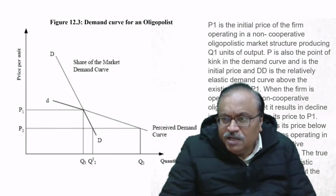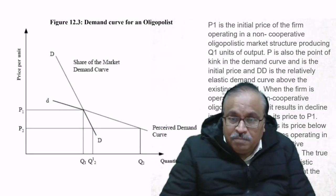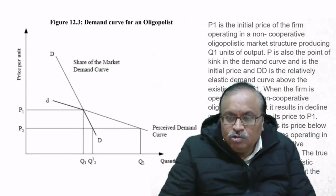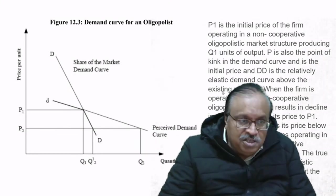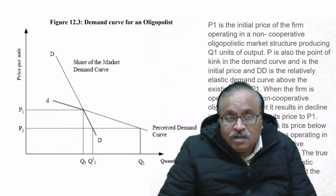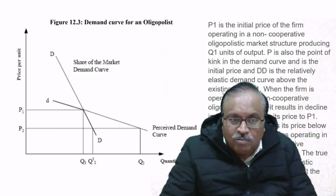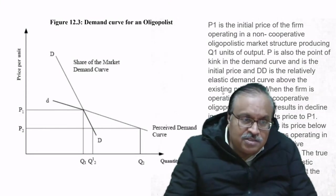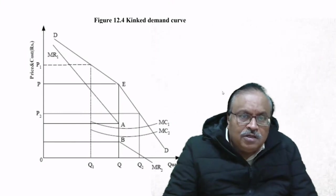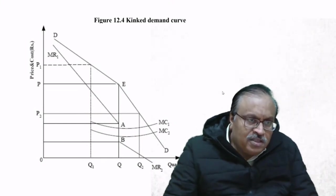If the firm reduces its price below P1 to say P2, the other firms operating in the market show cooperative behavior and follow suit. The true demand for the oligopolistic market is capital DD. So instead of the usual demand curve of capital DD, there is a kink and the demand curve moves from small dd to capital DD at the existing price P1. This also applies to the graph showing marginal cost one and marginal cost two, where the demand also gets slightly curved at the bend point.